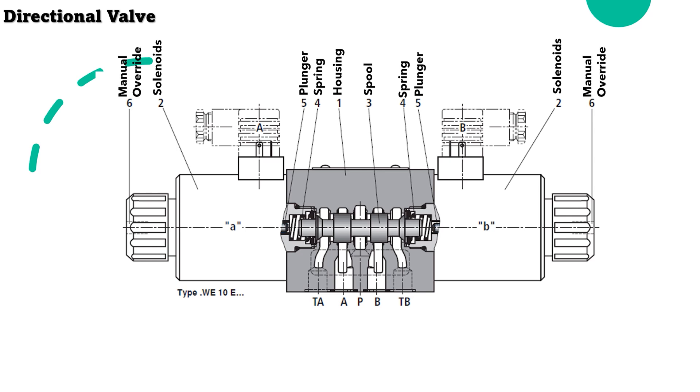Manual override: an optional manual override allows the control spool to be operated without energization of the solenoid.